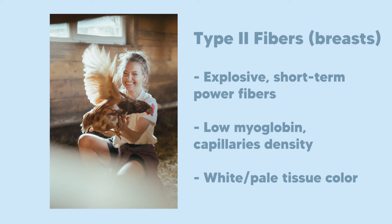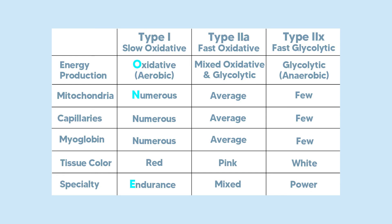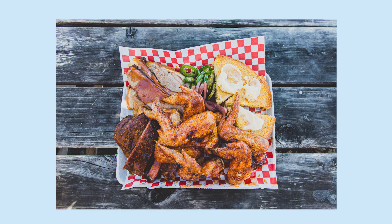Chickens can fly a little bit, but it's a short-term explosive activity, which is why breast meat is white — it's mostly fast twitch fibers that don't need a ton of blood and oxygen. Next time you're at KFC, you probably shouldn't try to order a three-piece Type 1 fiber plate, but in 10 years if you're having trouble remembering this entire chart, you can probably work out the details just by thinking about lunch. That covers muscle fibers — thanks for watching and good luck on your next test.